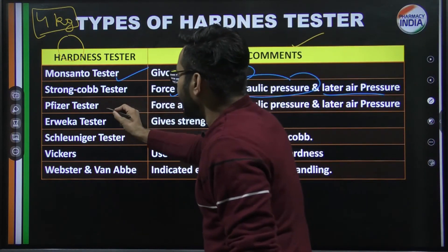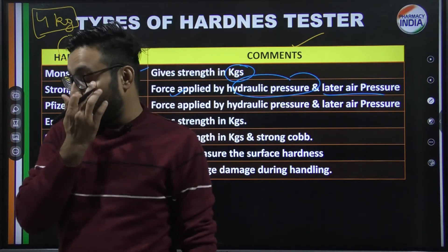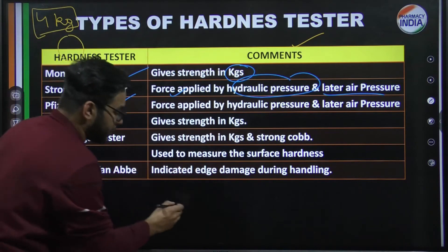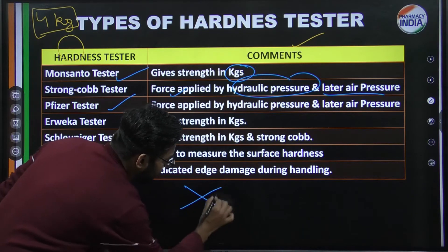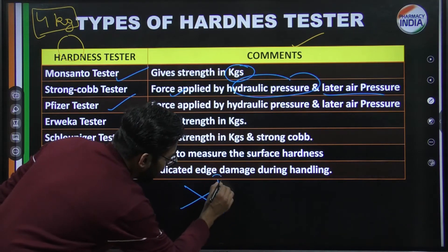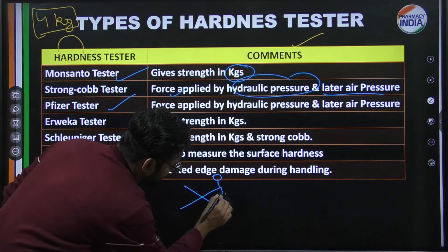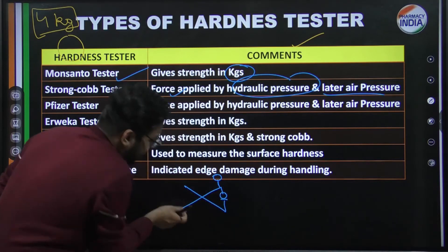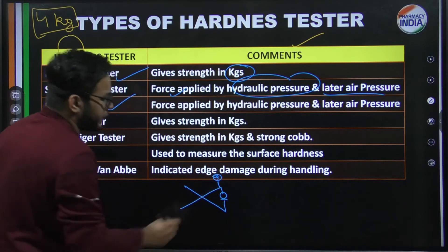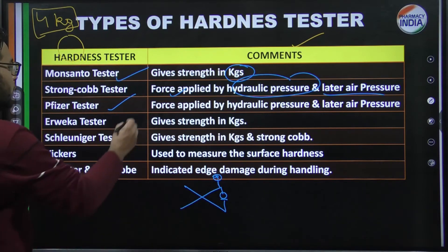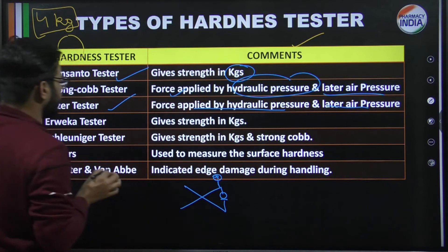Next is the Pfizer tester, which is very common — you may have seen it. Pfizer is a scissor-type instrument. You place the tablet formulation in it and press; the reading shows how much hardness the tablet has. The force here is also applied by hydraulic and later by air pressure.